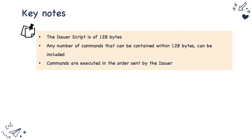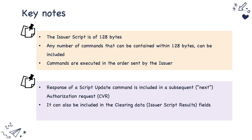Some key notes on issuer scripting: the issuer script in tag 71 or 72 is 128 bytes in length, so any number of commands that can be encompassed within those 128 bytes can be sent by the issuer. The terminal passes the commands in the order it received them in the authorization response.